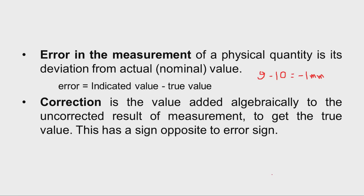Correction is the value added algebraically to the uncorrected result of measurement to get the true value, and it has a sign opposite to the error sign. For example, the uncorrected indicated value is 9 millimeters; the error is minus 1 millimeter, so we need to add plus 1 millimeter to get 10 millimeters. The correction factor of plus 1 millimeter has a sign opposite to the error sign of minus 1 millimeter.